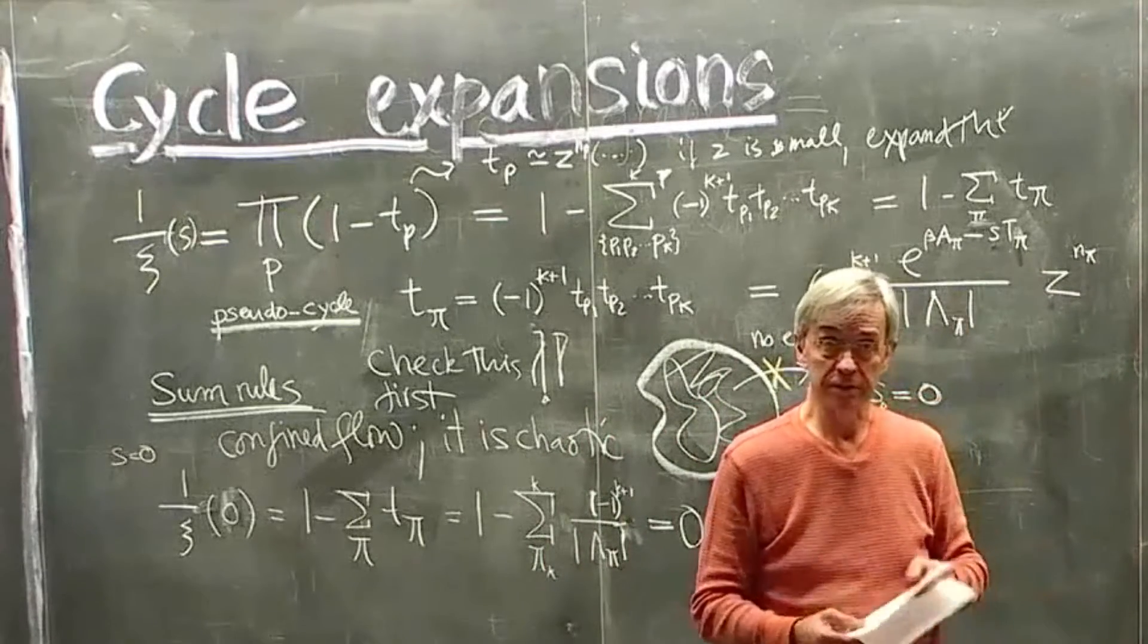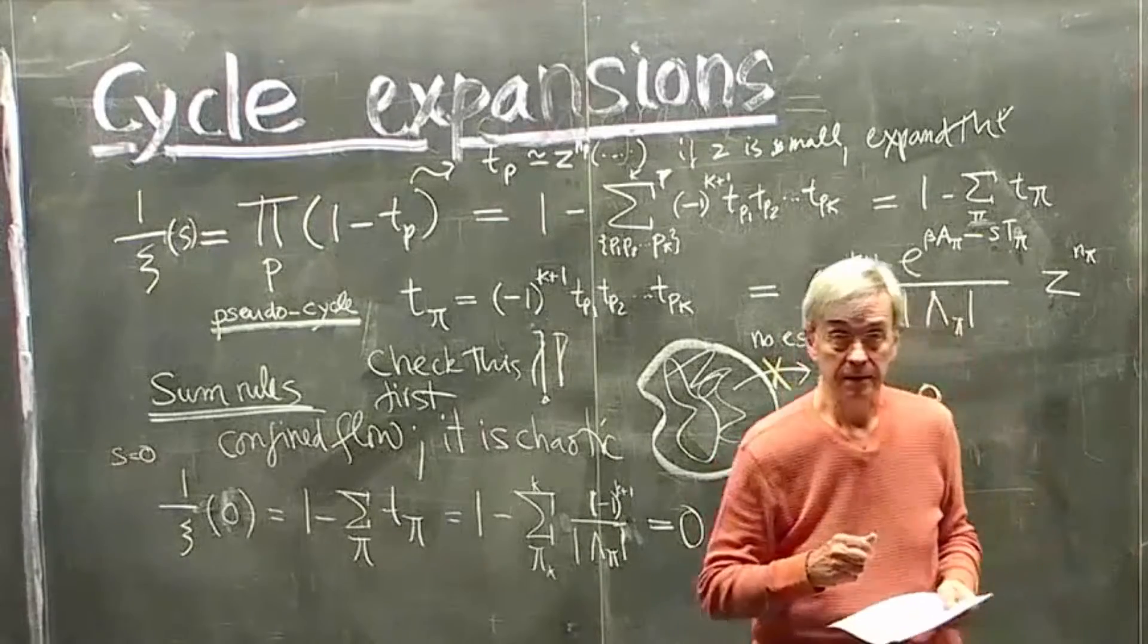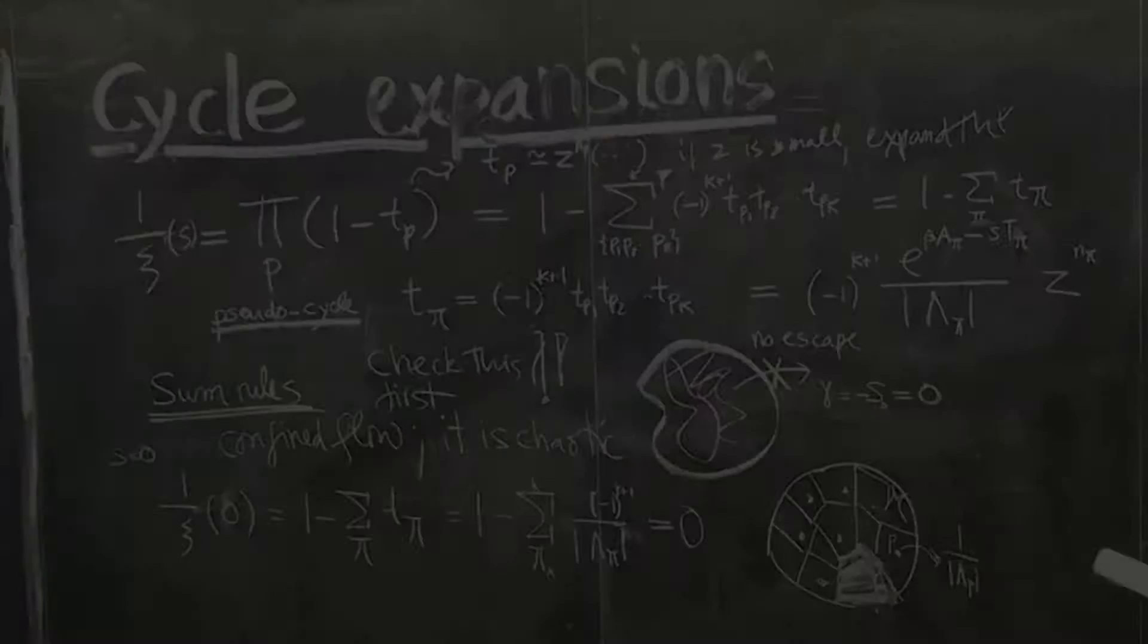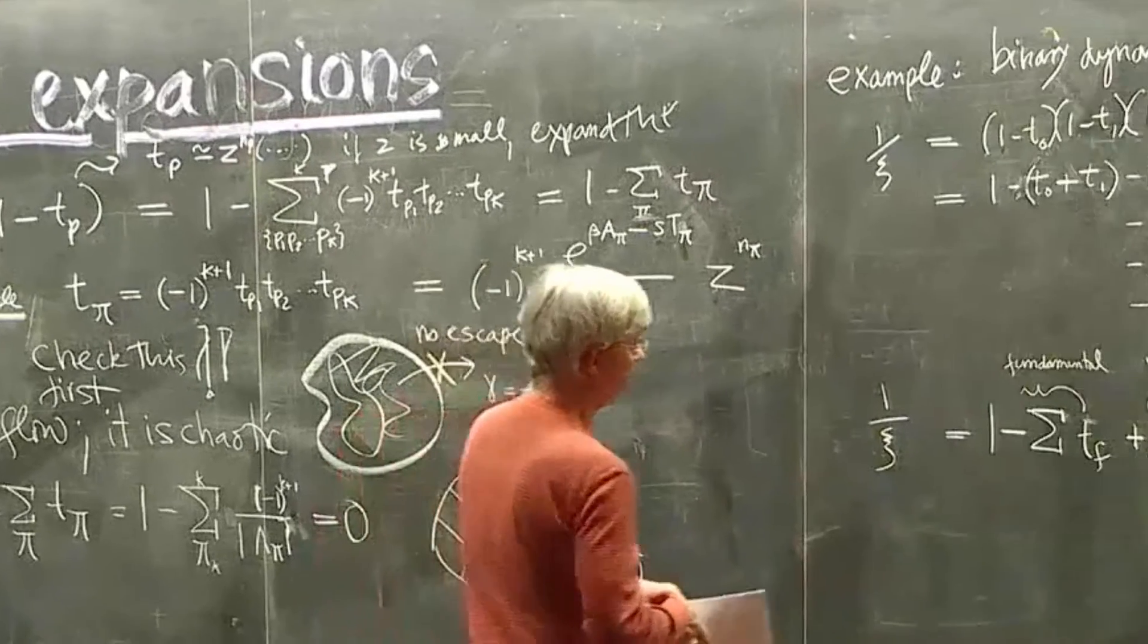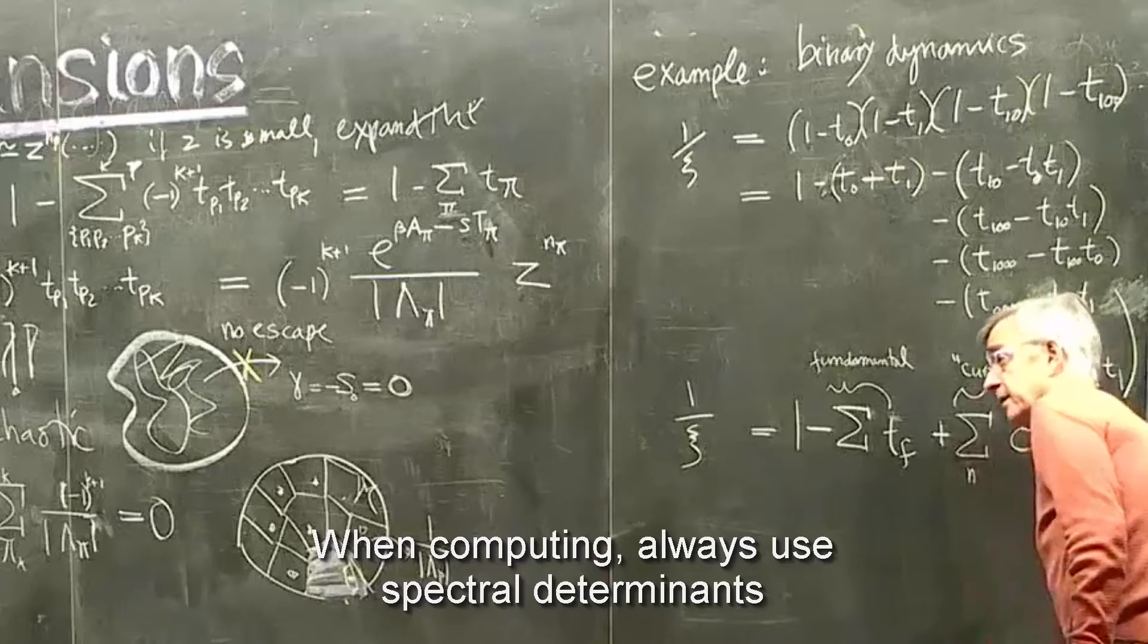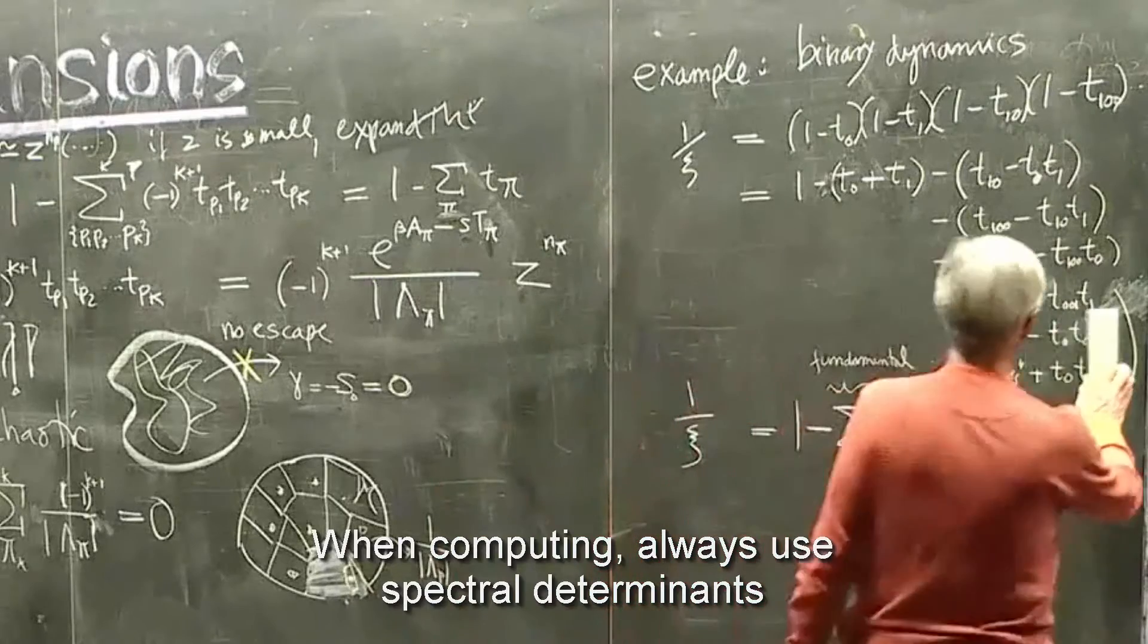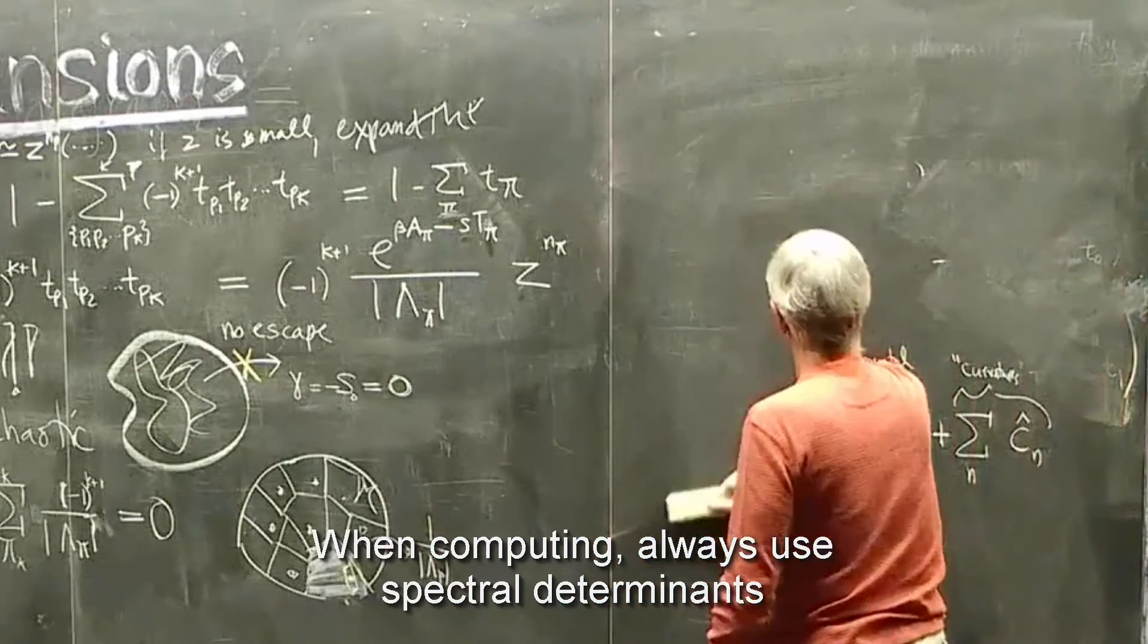But all calculations should be done in terms of spectral determinants, because those, we have a good control of their convergence, and they're much more convergent than zeta functions. Then there is a long song and story. So if you actually have to compute something, please read the material in the book, in chaos book explaining how you actually compute. The recommendation is, don't use zeta functions.